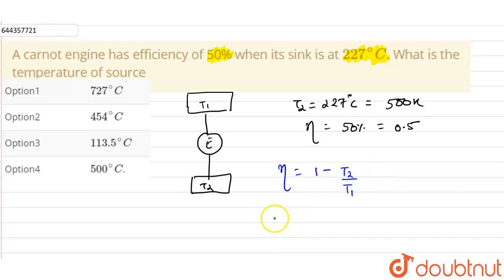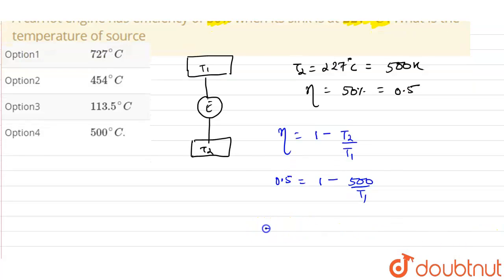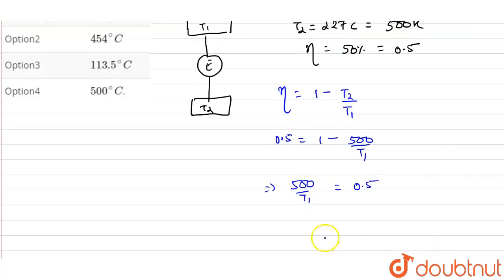So from here, efficiency is 0.5, that will be equals to 1 minus temperature of sink is 500 divided by T1, that is temperature of source. So from here, 500 upon T1, that will be equals to 0.5.